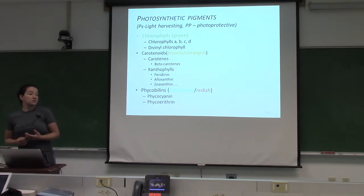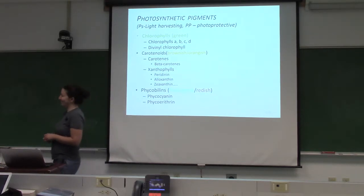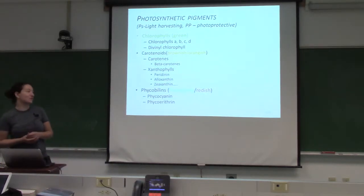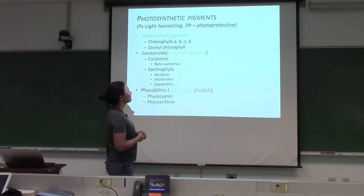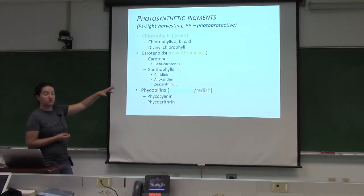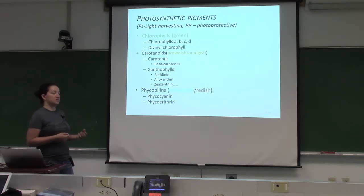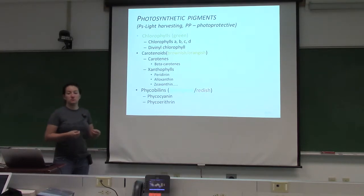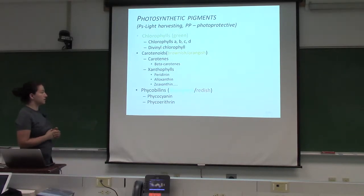Chlorophyll A might be okay for spinach, but in the ocean you need a little bit more. Plants have high diversity of pigments, but what's really cool about phytoplankton is this great diversity of pigments that actually play a role in the machinery of the cell but also change their optical properties. You're going to see us looking at how different pigment structures modify absorption spectra, and trying to use that to discern different types of phytoplankton.